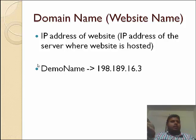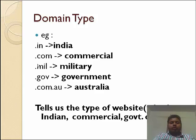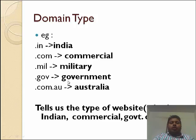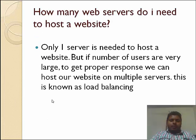This lookup is done automatically by the browser — you don't need to do it manually. Next is domain type. You may have seen websites ending in .com, .mil, .gov, etc. These tell us the type of website: .in means Indian website, .com means commercial, .mil means military, .gov means government, .au means Australian, .pak means Pakistani, .edu means educational/institutional. These are the domain types.